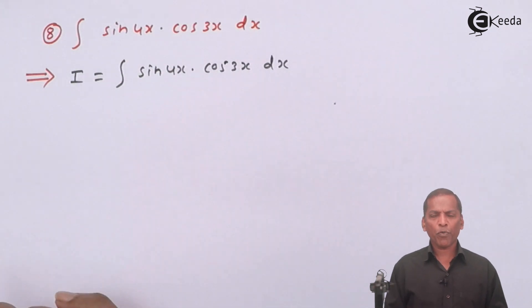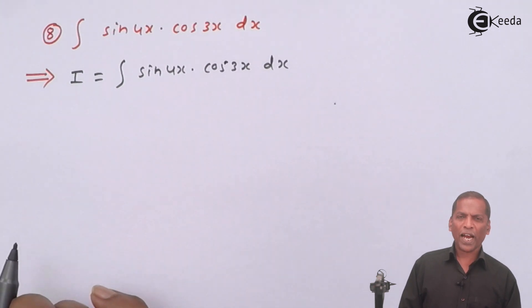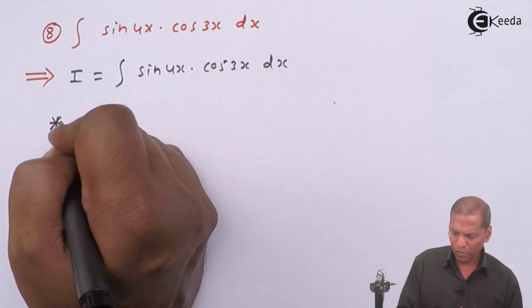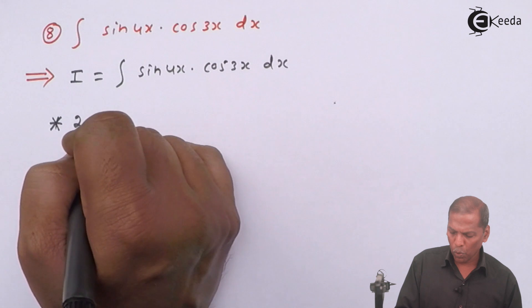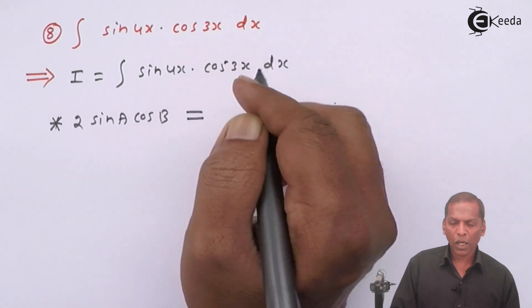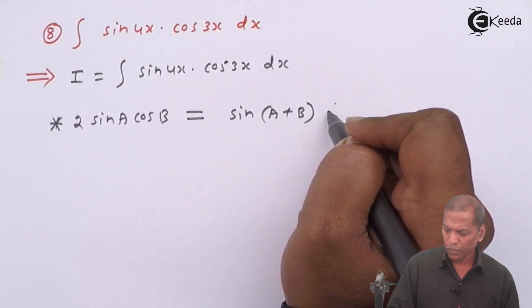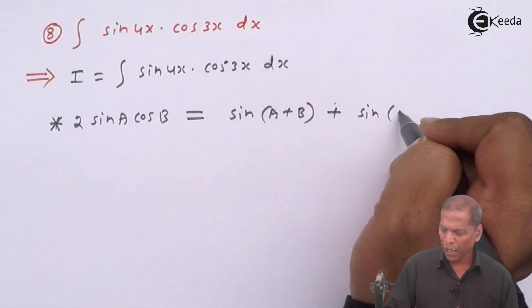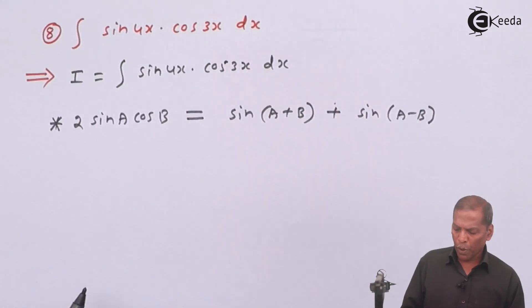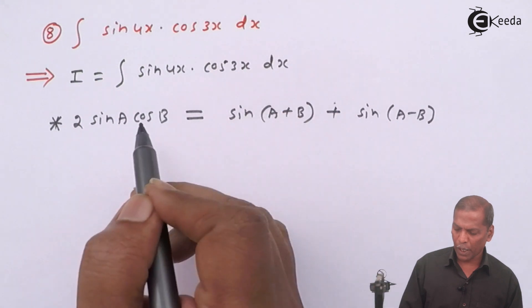In such a type of problem, we have to use the formula of defactorization. By using that formula: 2·sin(A)·cos(B) = sin(A+B) + sin(A−B). In the present case, 4x represents A and 3x represents B.